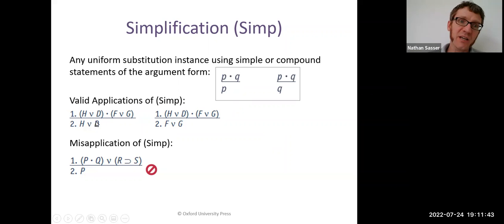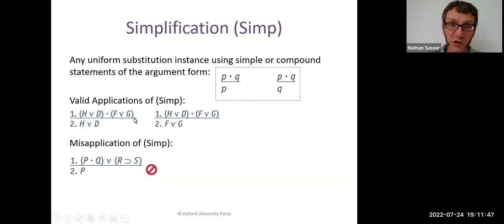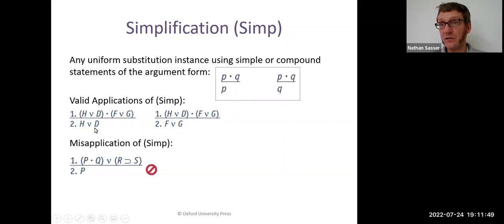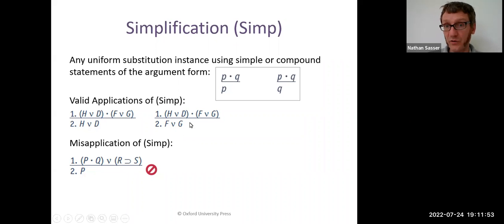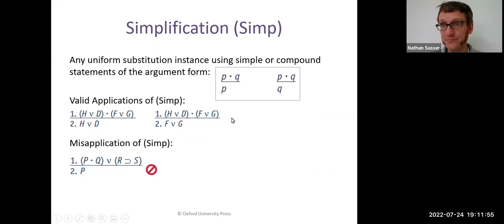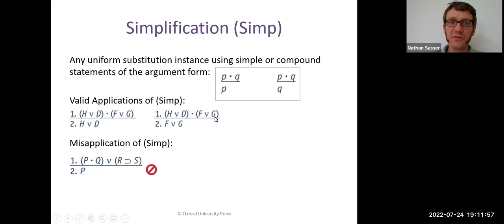For example, if you've got 'H or D' and 'F or G', then you could conclude 'H or D'. That's true because they're both true. Or you can conclude 'F or G' because they're both true — both of the conjuncts.